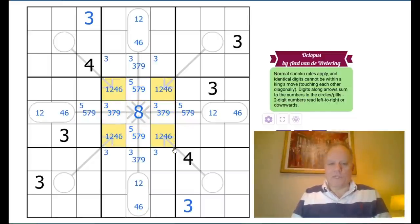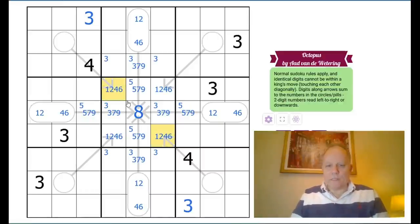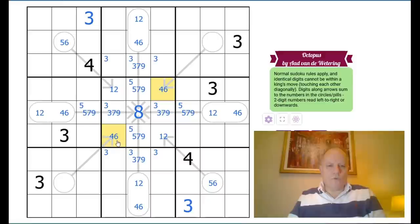The other cells here now have to be one, two, four, and six. And now suddenly, I'm not forgetting the king's move rule. These two can't be fours because they would be touching another four by the king's move. They also can't be sixes because whichever one was would put a ten in the circle. So they are a one, two pair.